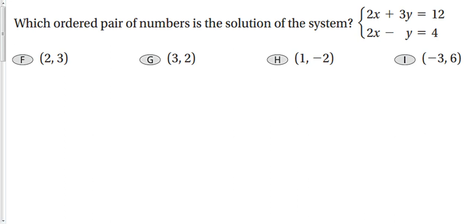To find which ordered pair is the solution to a system, plug each pair of numbers into both equations and determine which one satisfies the entire system.